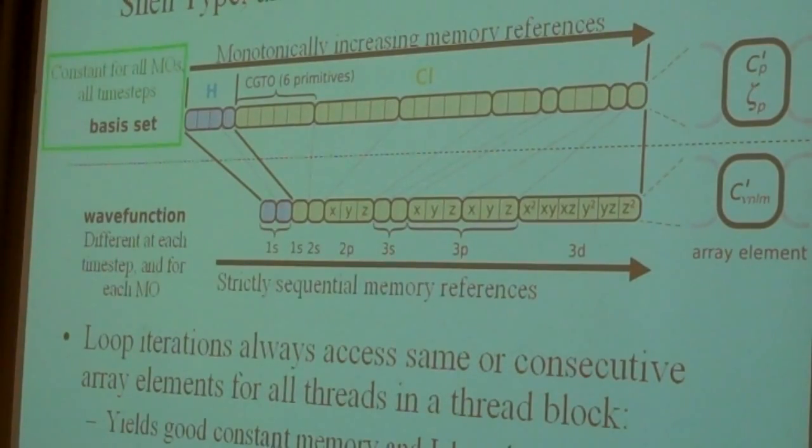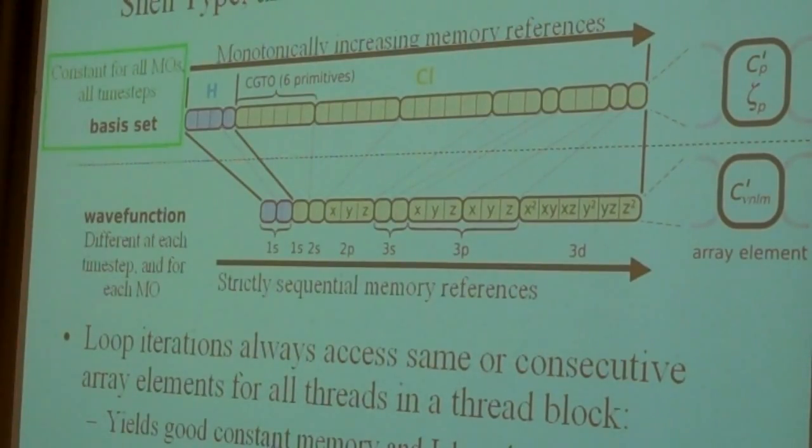This means that for Fermi, we could get rid of that code that put everything in constant memory and we could just put it in global memory. And because we have a friendly access pattern, it will have nearly the same performance. And a kernel is about half the amount of code. And it's much easier to read, so that's great.